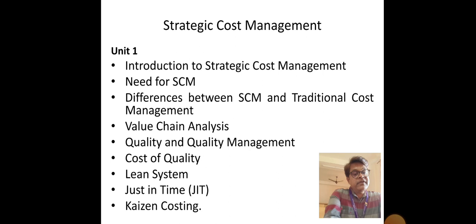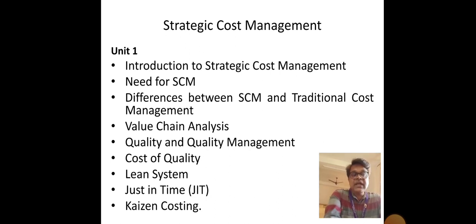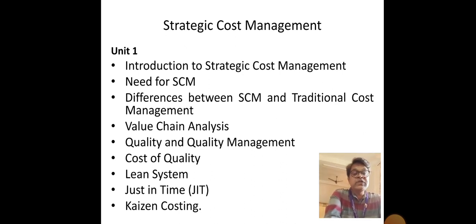What is the basic difference between normal cost accounting and strategic cost management? Looking at the slide, the third point covers differences between SCM and traditional cost management. Traditional cost management focuses on short-term goals of a business organization that can be achieved within a year or less. Strategic cost management focuses on long-term objectives where the organization can gain competitive advantages compared with its competitors. In this manner, strategic cost management differs from traditional cost management.